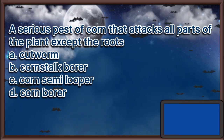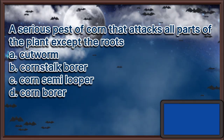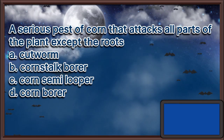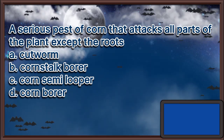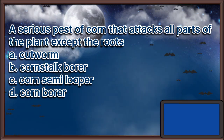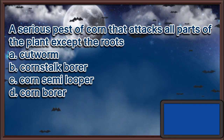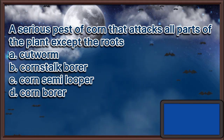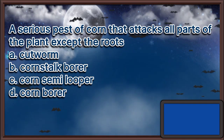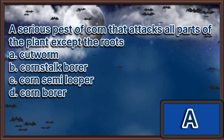A serious pest of corn that attacks all parts of the plant except the roots: A. Cutworm, B. Corn stalk borer, C. Corn semi-looper, D. Corn borer. The answer is letter A.